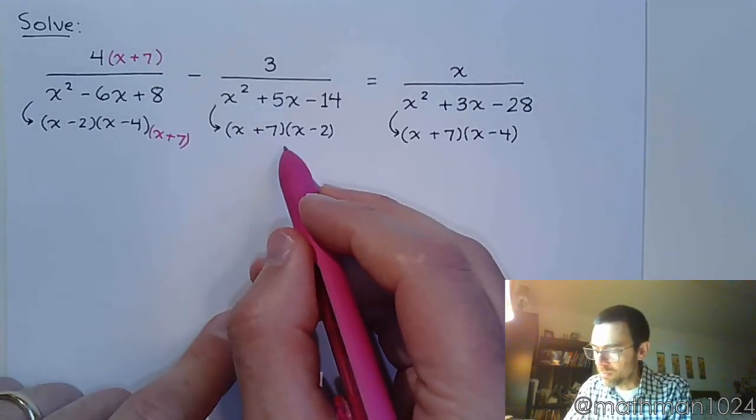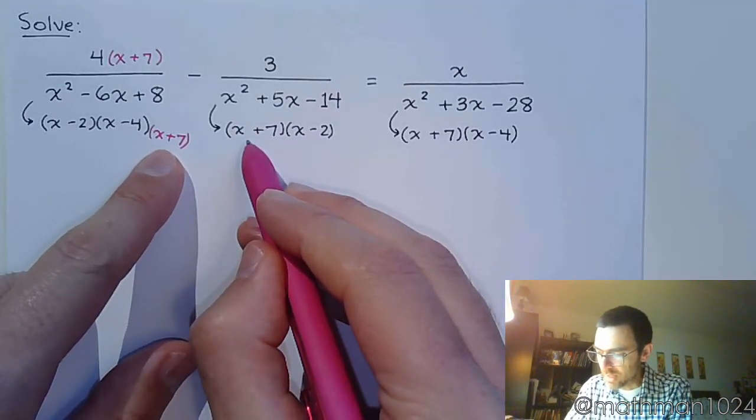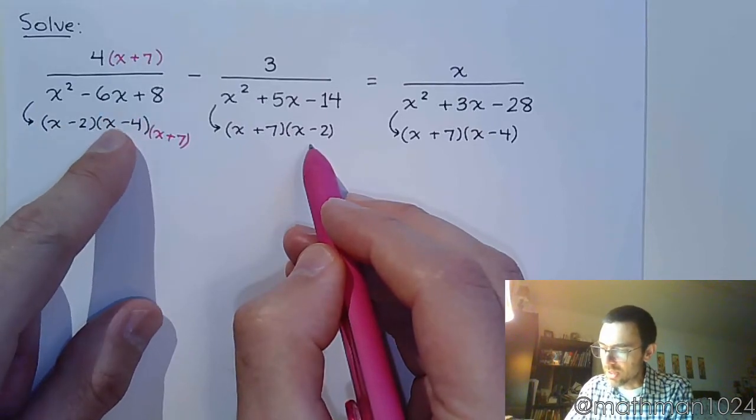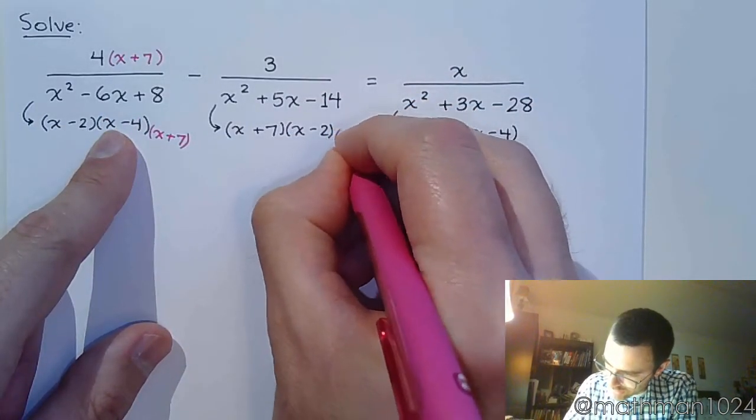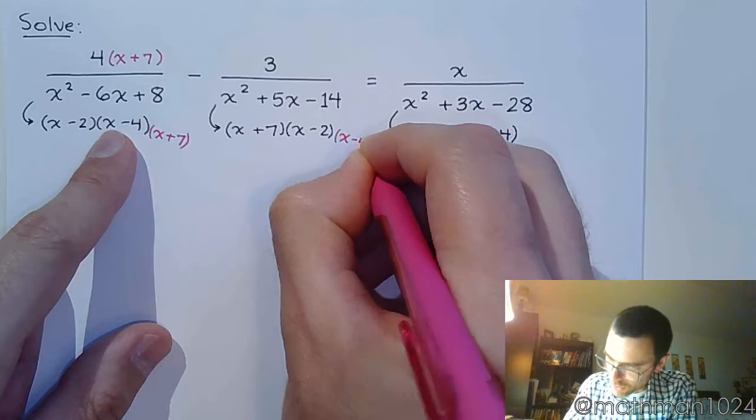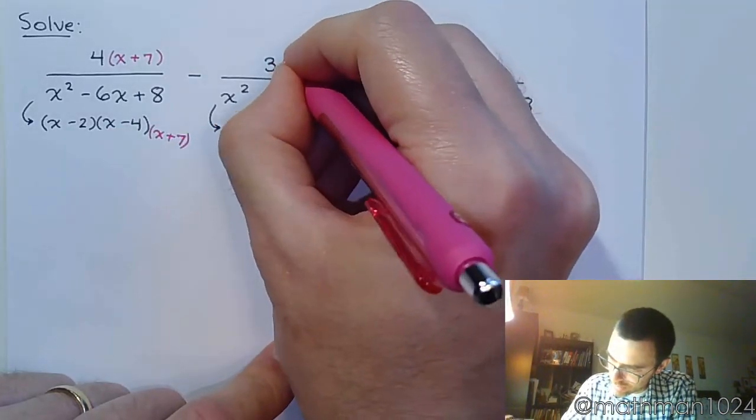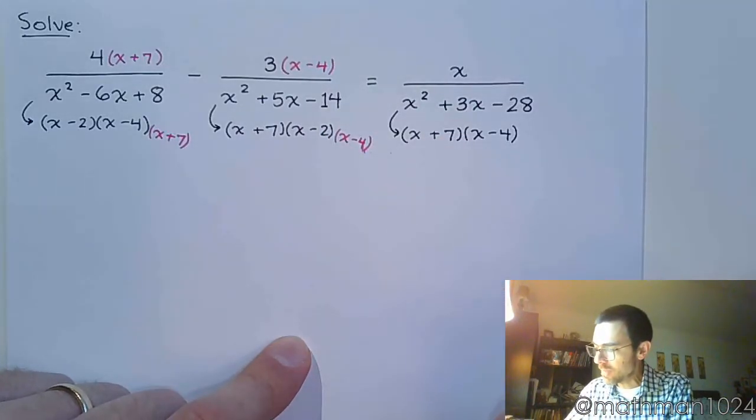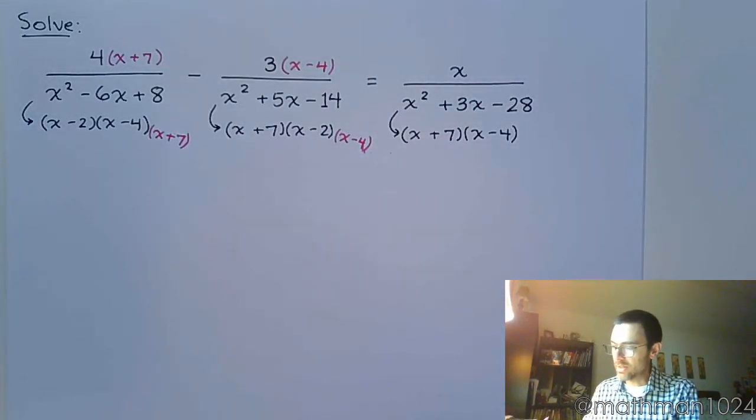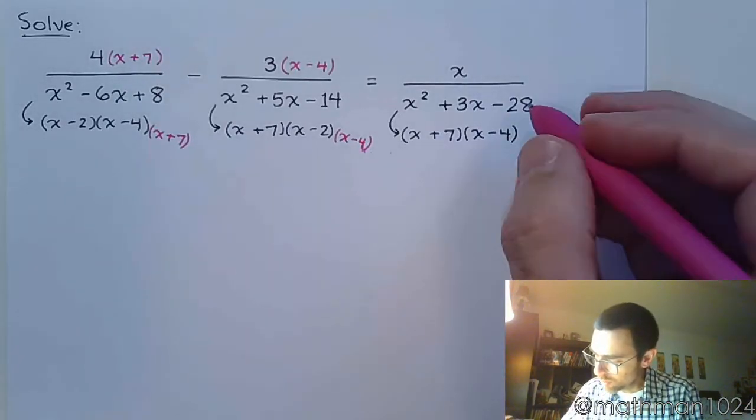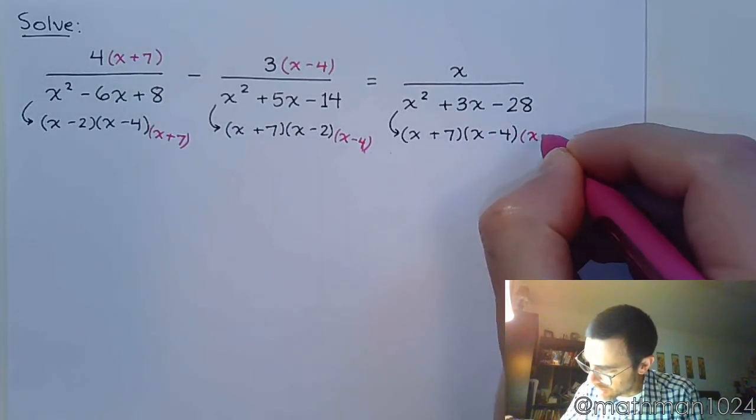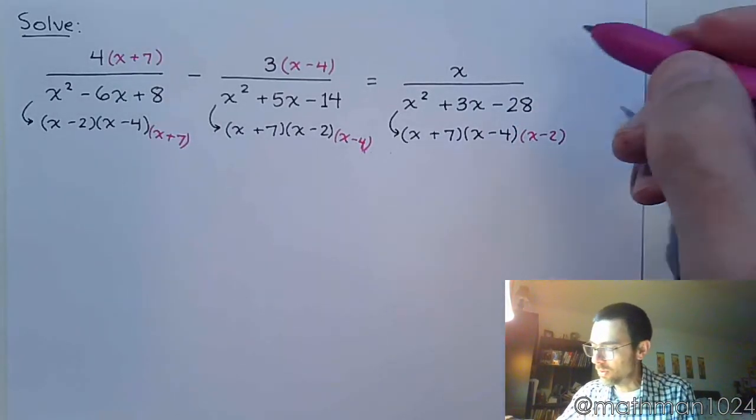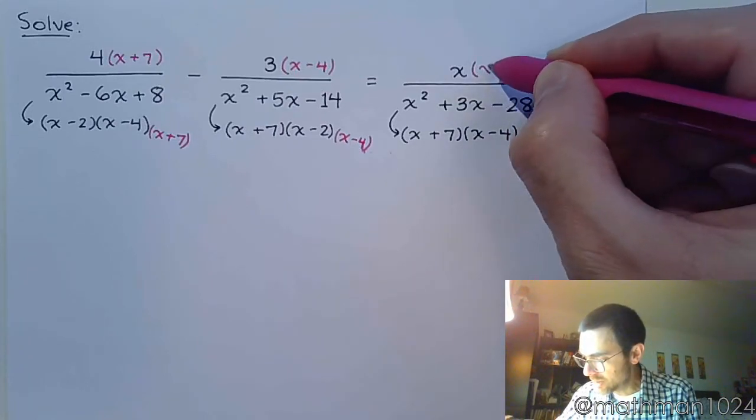The factor that's missing here, let's see, there's (x + 7) and (x - 2), so he's missing (x - 4). So put in the factor (x - 4) in the denominator and the numerator. And then finally, for that last fraction, we're missing the factor (x - 2). So in both the numerator and the denominator.